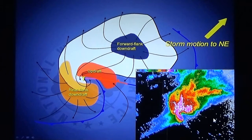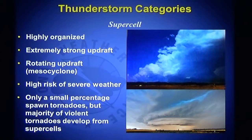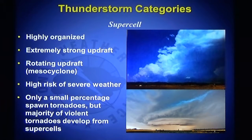Again, a supercell storm in a drawing and on Doppler weather radar from the National Weather Service at Bismarck — this storm is moving through Grant County, North Dakota. Supercell thunderstorms are differentiated from other thunderstorms in that the updraft in the supercell is actually rotating; it's spinning as it moves up through the thunderstorm. Supercells are highly organized with extremely strong, rotating updrafts. With supercells, there's a very high risk of severe weather — not only large hail and high wind, but flash flooding and tornadoes.